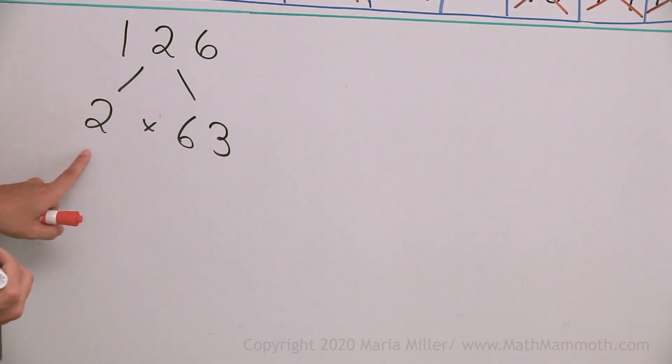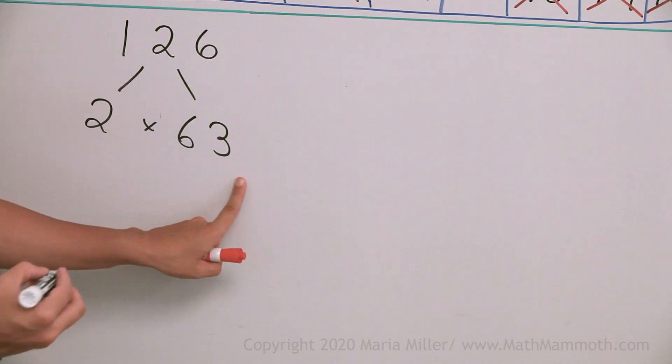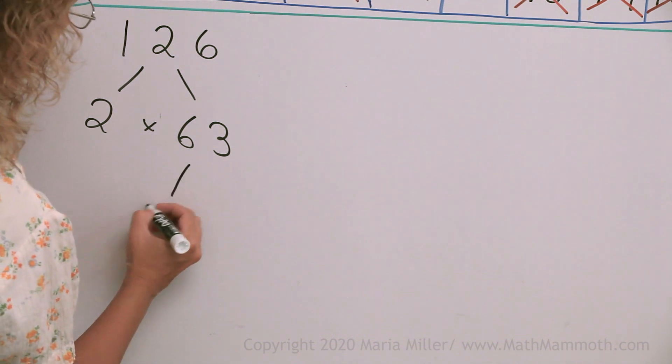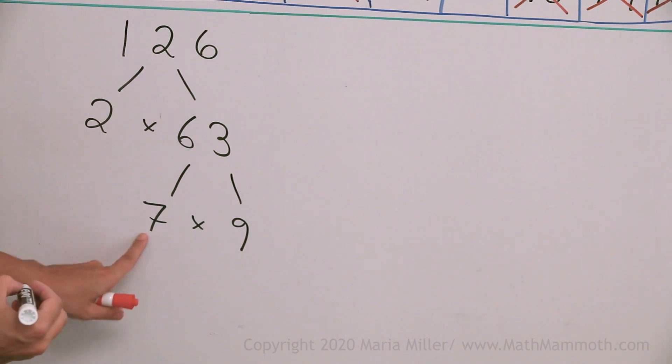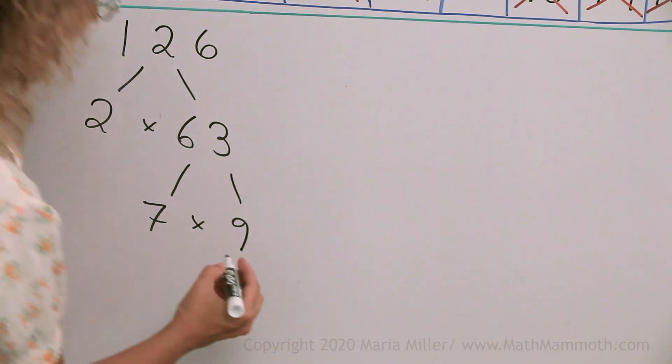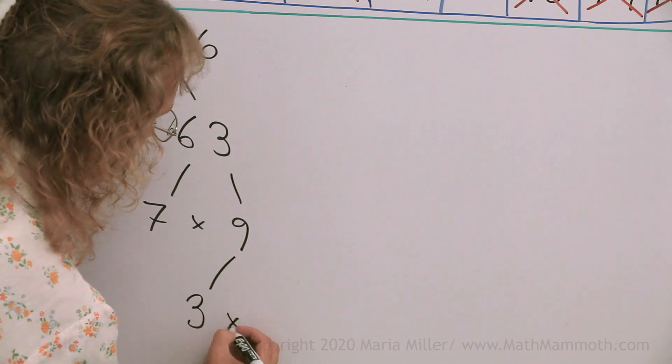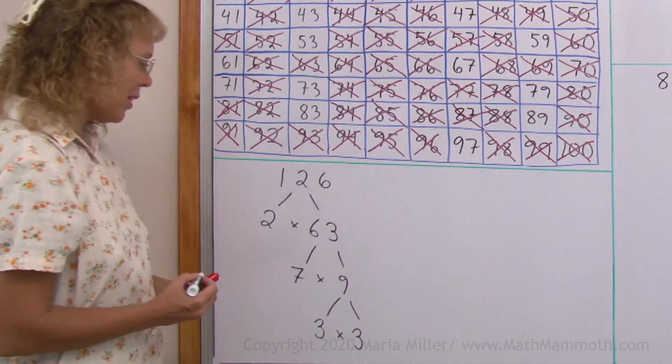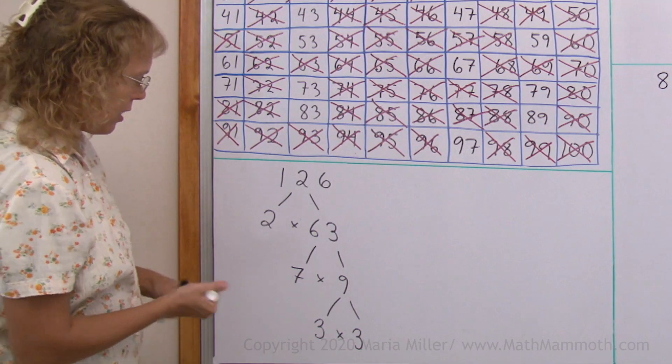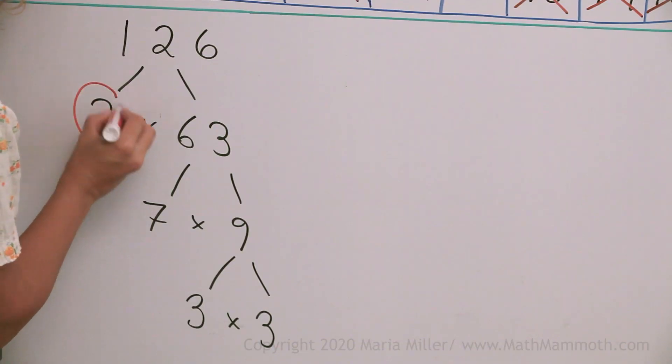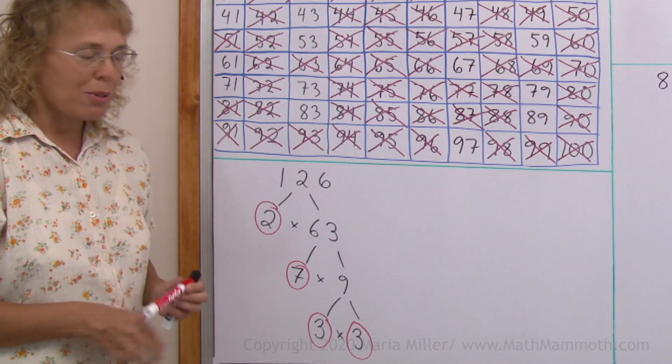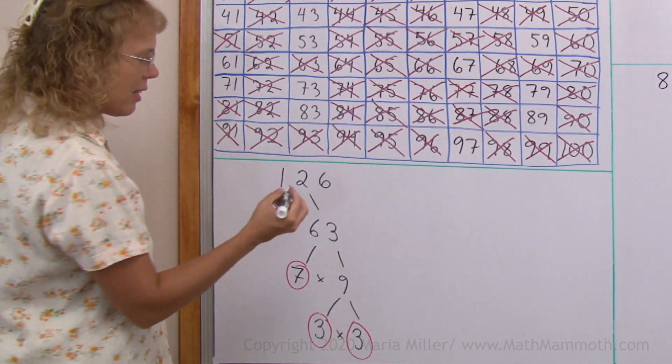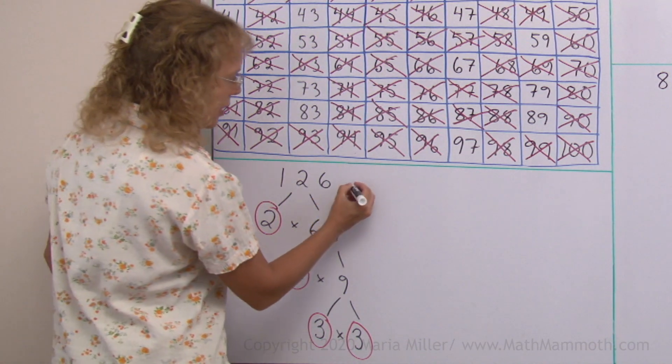We go down the tree. Then 2 is prime, but 63 I can factor to 7 times 9. Now 7 is prime, so I won't continue here anymore. I have reached a leaf of the tree, but 9 I can factorize to 3 times 3. And now this is all done. The leaves of my tree are 2, 7, 3, and 3, all prime numbers. And now I can actually write the prime factorization.